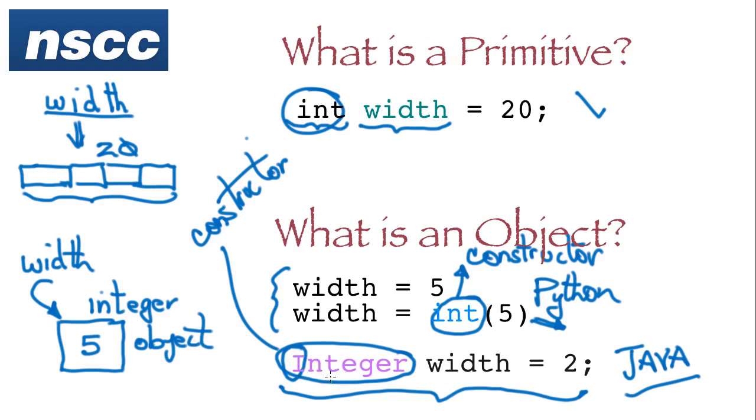So here we're doing the same thing as Python. We're creating an object. The name width is going to point to the object, and the Integer object is going to have the value 2. So in Java we get both, the ability to create primitives and the ability to create objects.